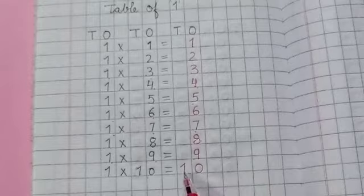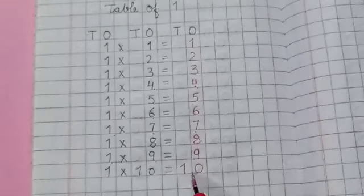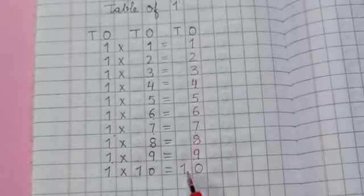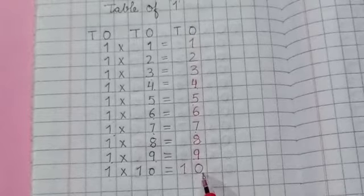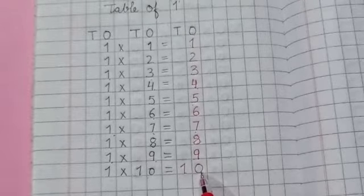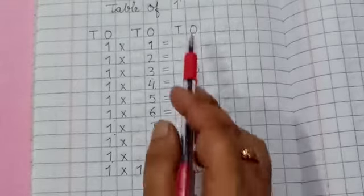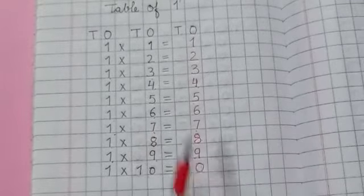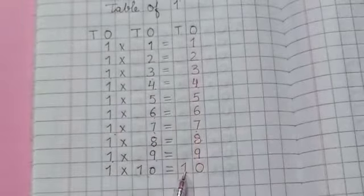Because ten is a two digit number. Ten has two digits. One and zero. That's why we have write zero in one's place and one in ten's place.